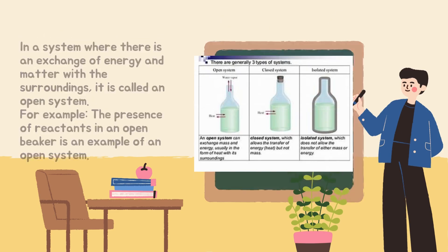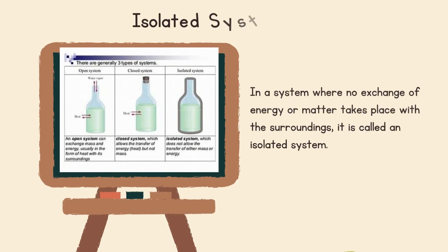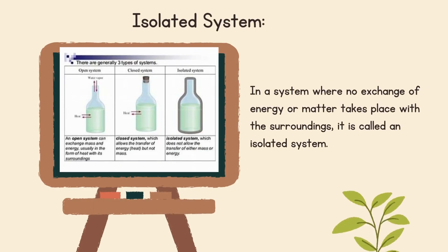Closed system: a system is said to be a closed system when there is no exchange of matter, but the exchange of energy is possible. For example, the presence of reactants in a closed vessel made of conducting material. Isolated system: a system where no exchange of energy or matter takes place with the surroundings is called an isolated system.